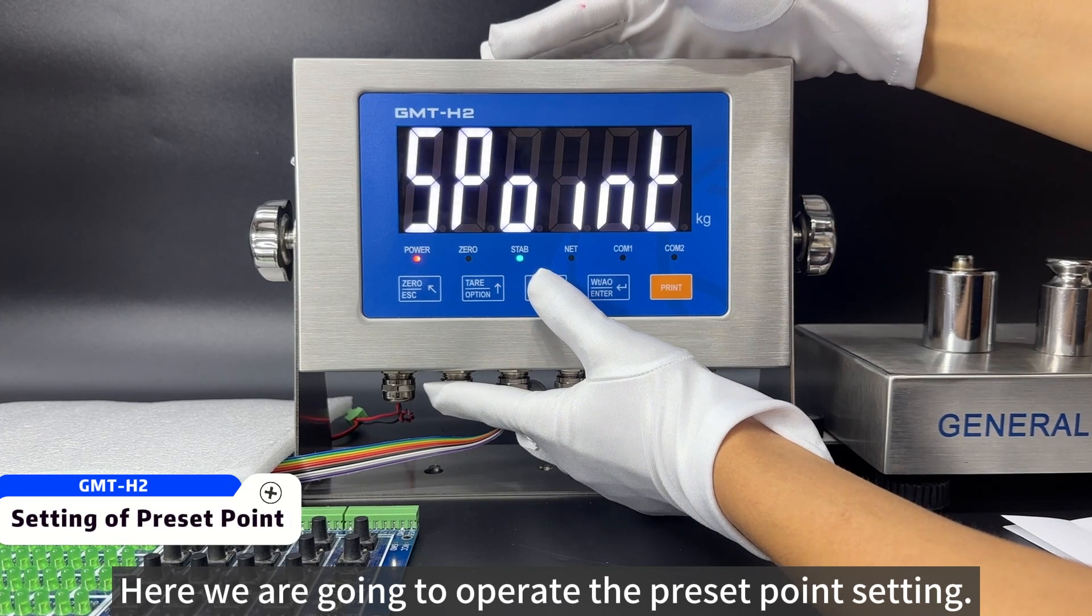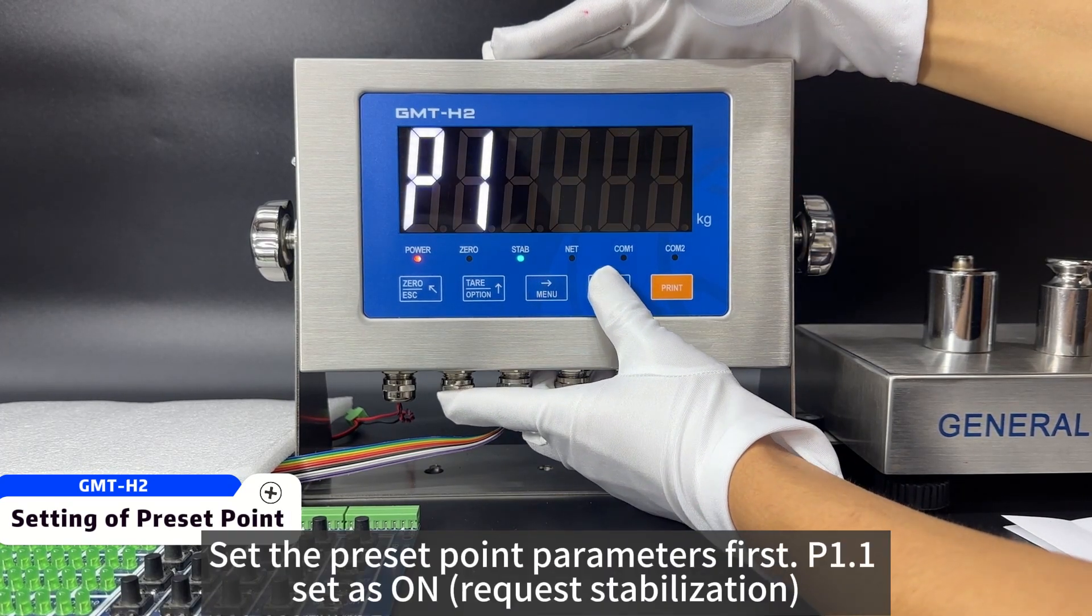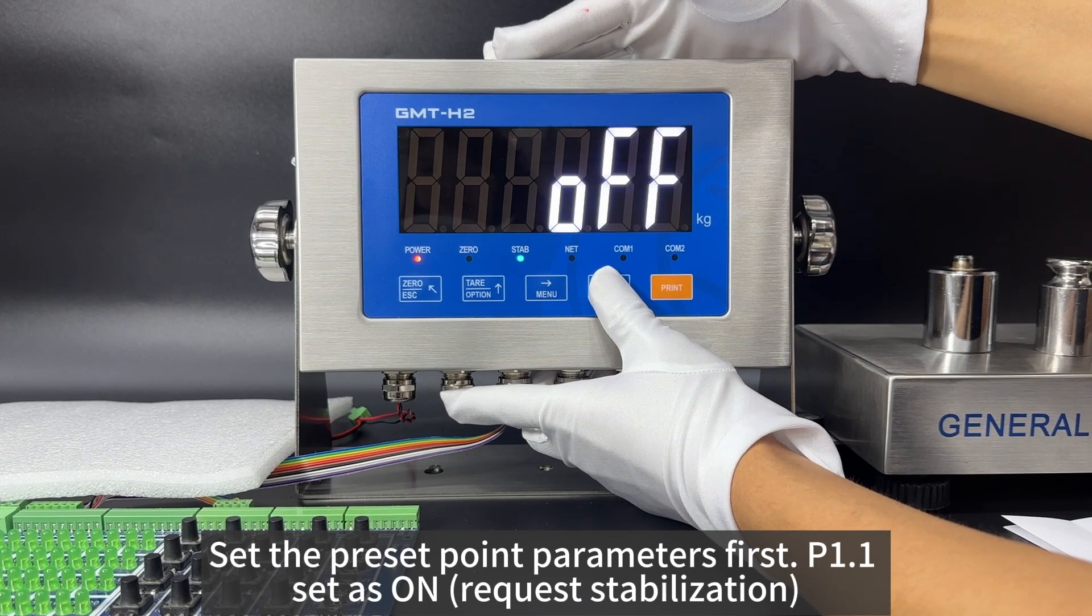Here we are going to operate the preset point setting. Set the preset point parameters first. P1.1 set as ON.